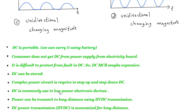DC is commonly used in low power electronic devices. Power can be transmitted to long distance using HVDC transmission. DC power transmission, HVDC, is economical for long distance.